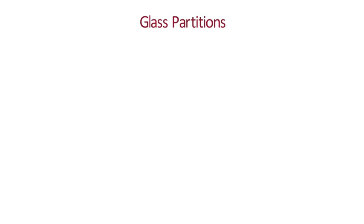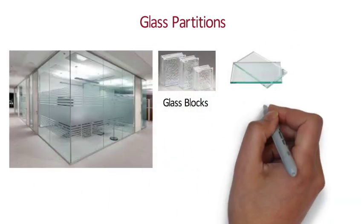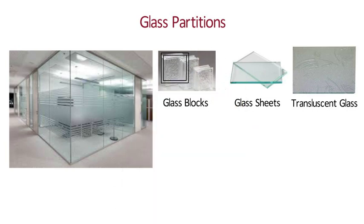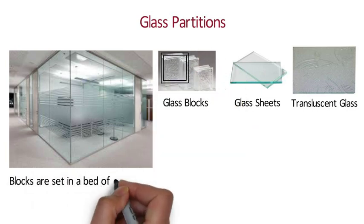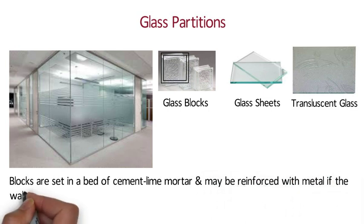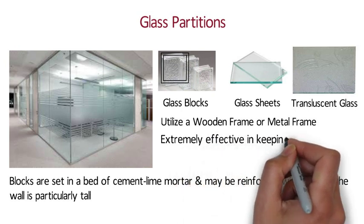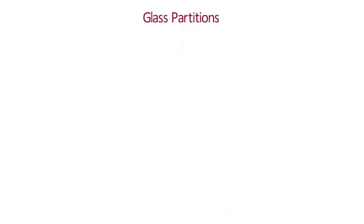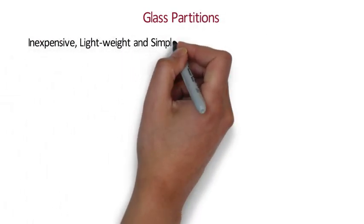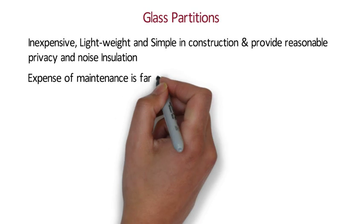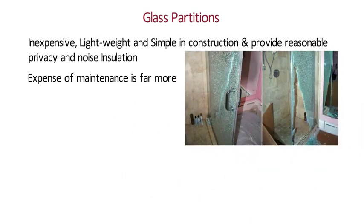Glass Partitions: A glass partition wall may be made with either hollow glass blocks or glass sheets. The blocks are made of translucent glass and come in a variety of sizes and shapes; however, square blocks are the most commonly used. The blocks are set in a bed of cement lime mortar and may be reinforced with metal if the wall is particularly tall. Glass sheet partition walls utilize a wooden or metal frame to hold the sheets in place, fixed to the walls and the floor. They are extremely effective in keeping out pests and noise, and are resistant to moisture.